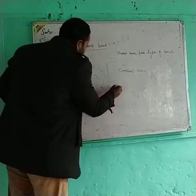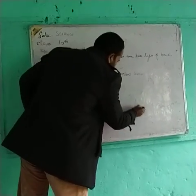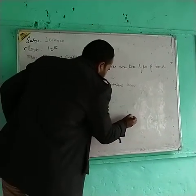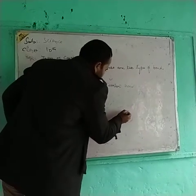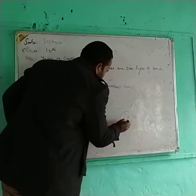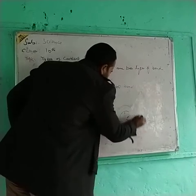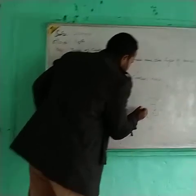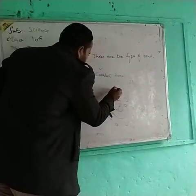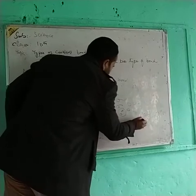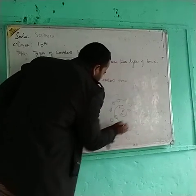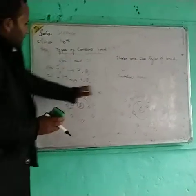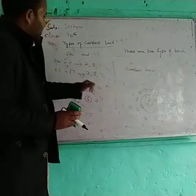On the other hand, chlorine has atomic number 17. Its nucleus contains protons and neutrons. The first shell has two electrons — complete. The second shell has eight electrons — complete. The third shell has seven electrons, so chlorine needs only one more electron to complete its octet.